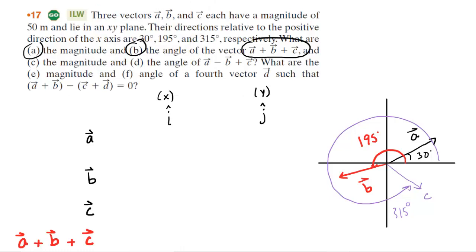It's important to understand that in this question, the angles are measured relative to the positive direction of the x-axis. As long as the angles are measured relative to that positive x-axis, you can always use the cosine of the given angle for the x-component, and you can use the sine of the given angle for the y-component. But that's only if the angles are measured relative to the positive x-axis, which in this problem, luckily, they are.